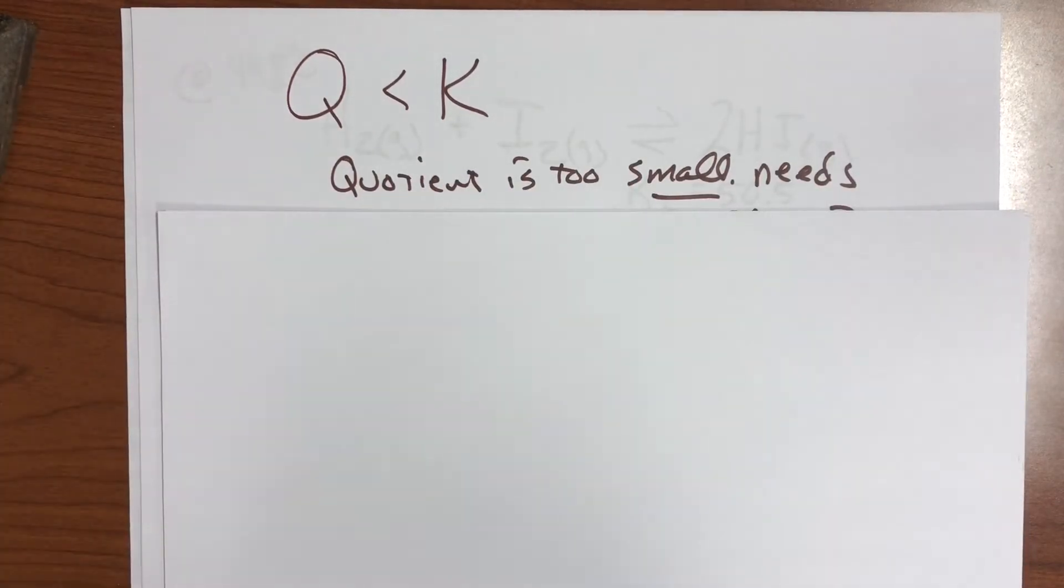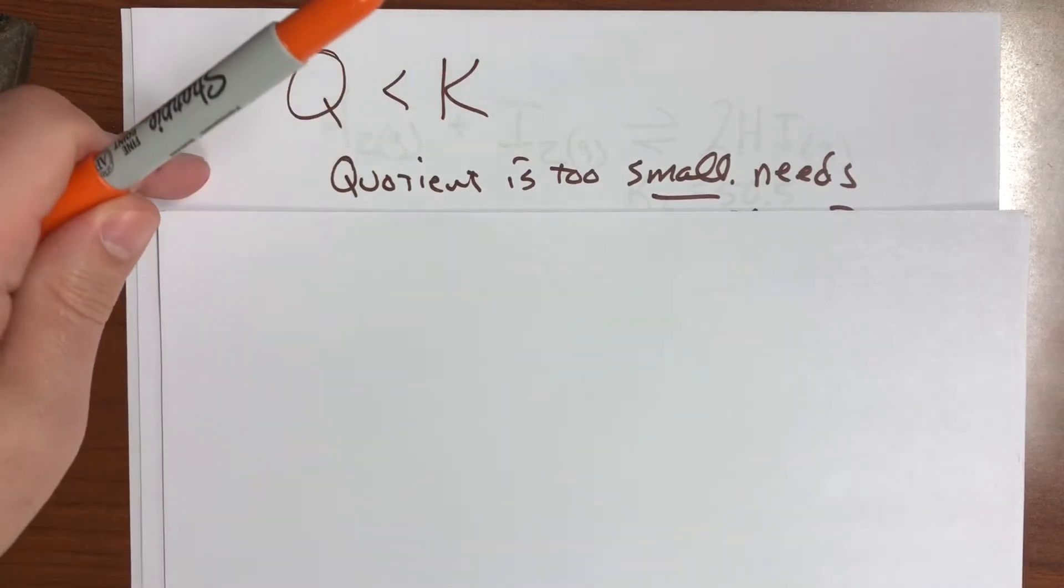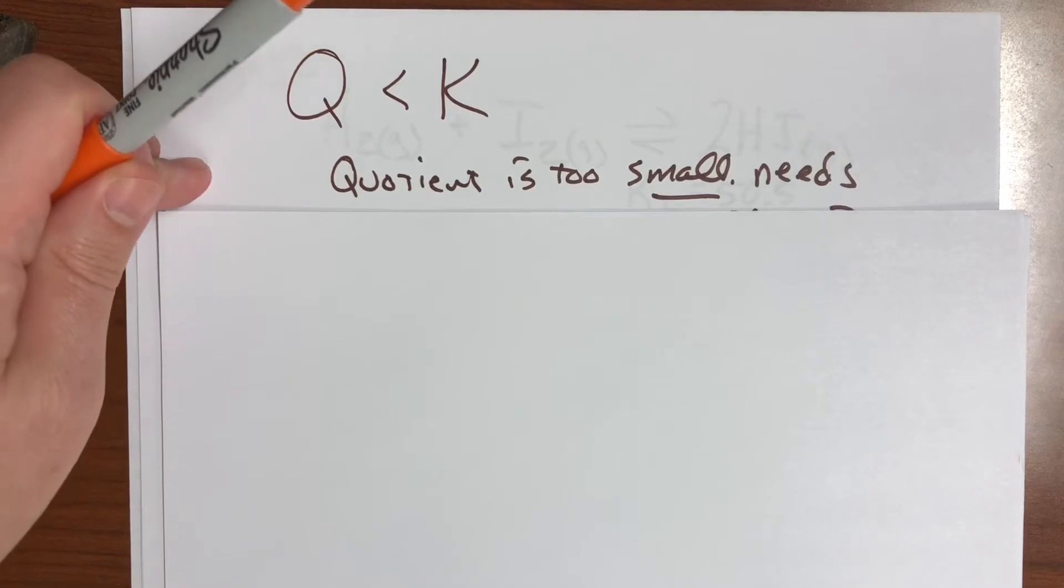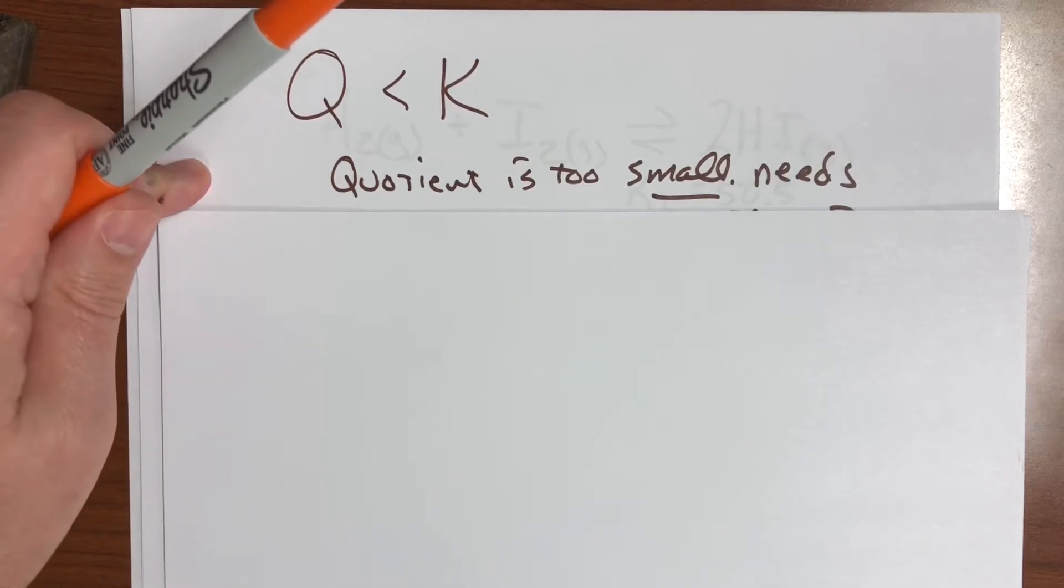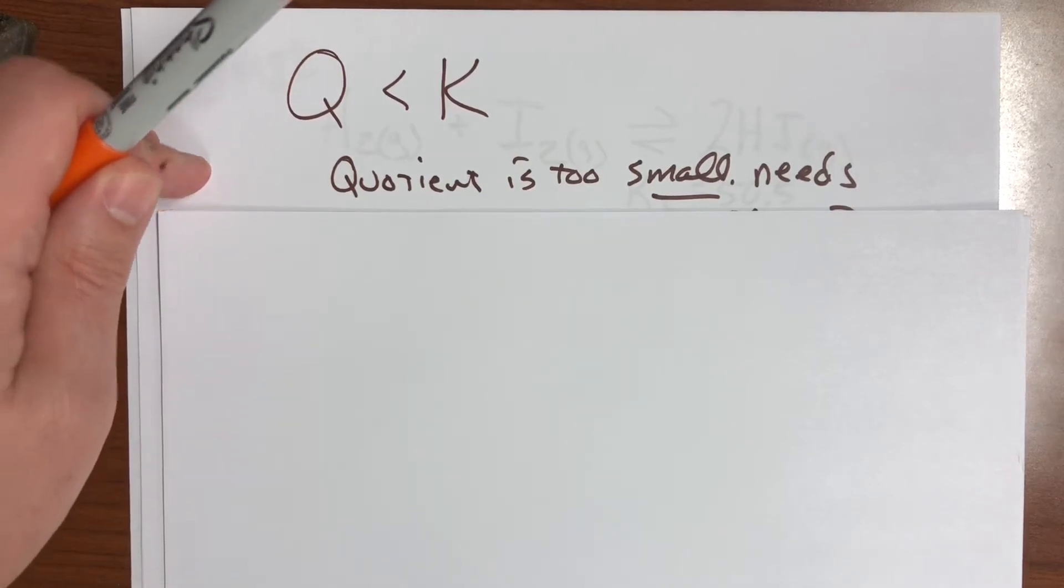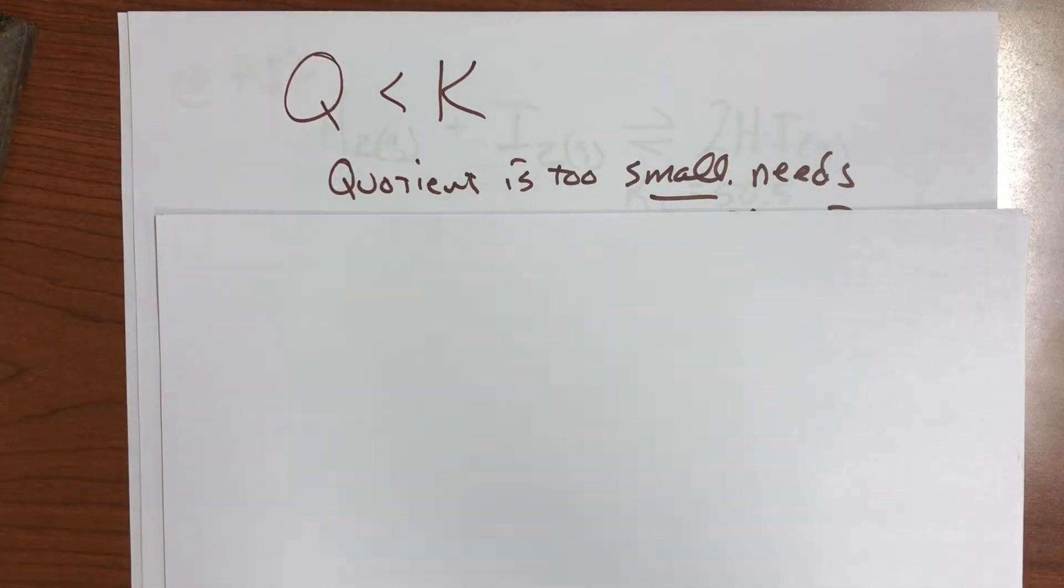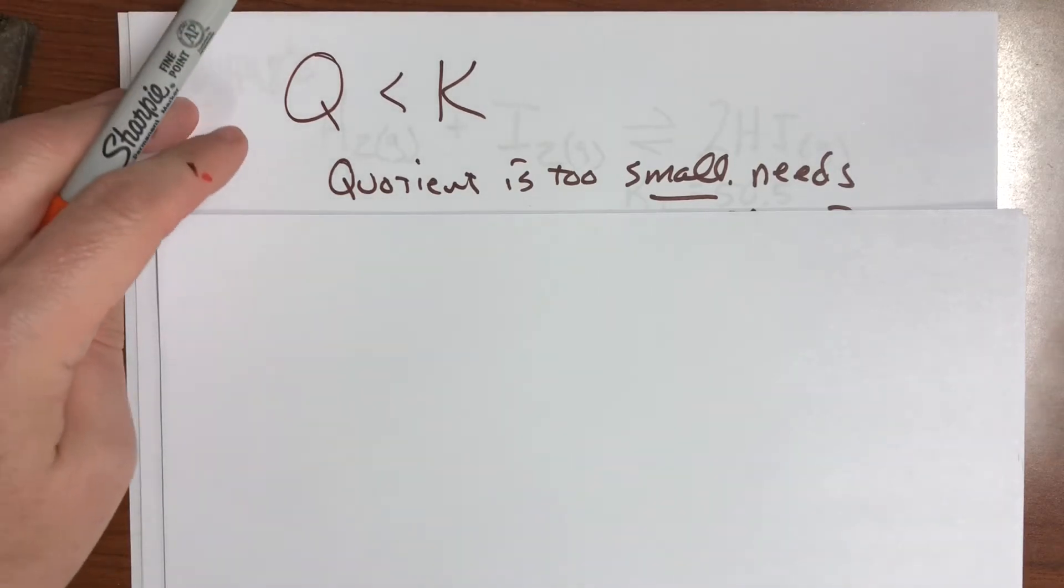Now keep in mind that quotients are numerators divided by denominators. So think about that. If your quotient is too small, do you need more numerator or more denominator? Putting things, adding to the numerator is going to make the number bigger. Adding to the denominator is going to make the number smaller. So if it's too small, we need more numerator.